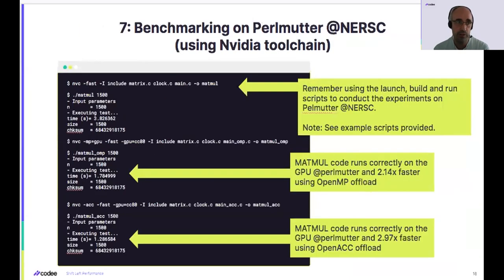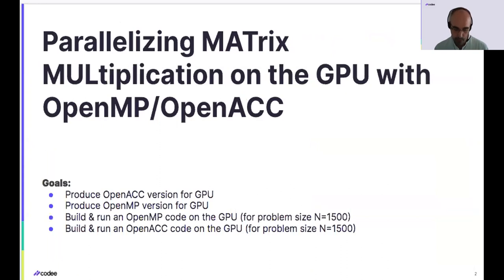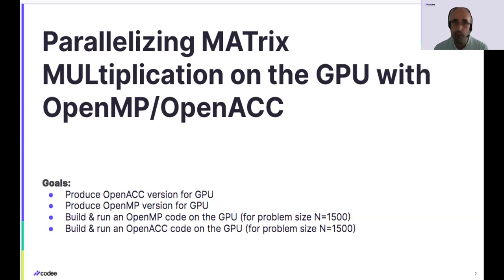And finally, generate these versions, run them on permuter, and see what is the performance gain that you get when you use these OpenMP and OpenACC capabilities. From the point of view of the labs, it's essentially the same sequence of commands and invocations for code E, and it will provide you with the reference sequential version, an OpenMP implementation, and an OpenACC implementation that you can build, compile, and benchmark on permuter. That way we can see that exactly the same sequence of steps can be used to produce GPU code for very different kernels, from Pi computation to matrix-matrix multiplication.